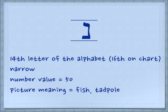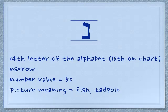The first letter we're going to learn today is the Nun, and you'll find it under that bracketed pair with the number value of 50. Remember we're counting from the right to the left. The Nun is the 14th letter of the alphabet, but there are two of them, so it's going to be the 16th figure on the chart. The Nun is characterized by a narrow shape and its picture meaning is like a little fish or a little tadpole. The sound for this letter is like our N sound.